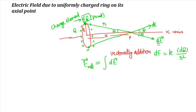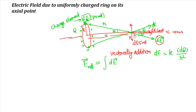If I resolve this field into two components, and resolve all electric fields at point P, we have one component along the axis and one component perpendicular to the axis. This ring is very symmetrical about its center, so all perpendicular components come in pairs and cancel out. We only need to add up the components of the field along the x-axis.